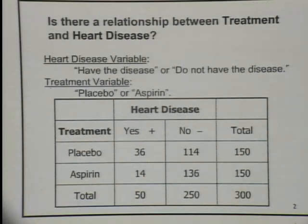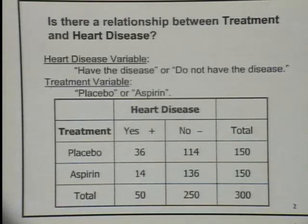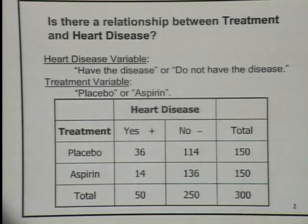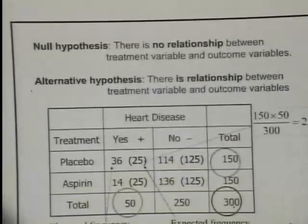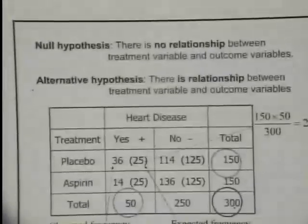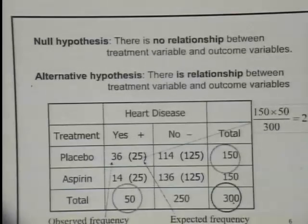When I read your assignment papers, I realized a lot of you had trouble stating the hypothesis. If you're not comfortable with those notation — mu, whatever — you don't have to use them. You can just write a phrase or sentence to describe the null. For testing the mean, null is mean equal to a certain value; alternative is mean greater than or less than. For this case, you can write: null hypothesis is there's no relation between treatment variable and outcome variable; alternative is there is a relation between them.